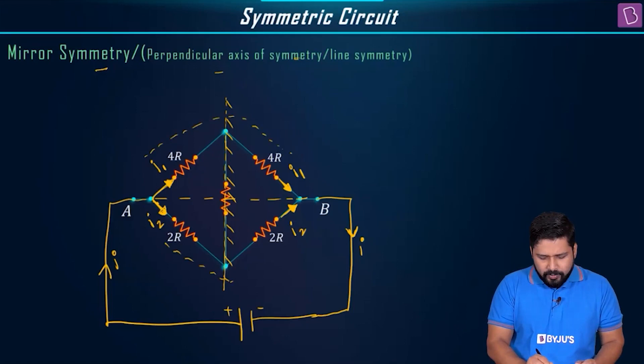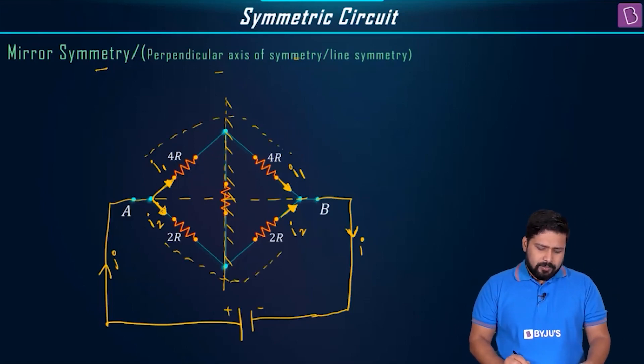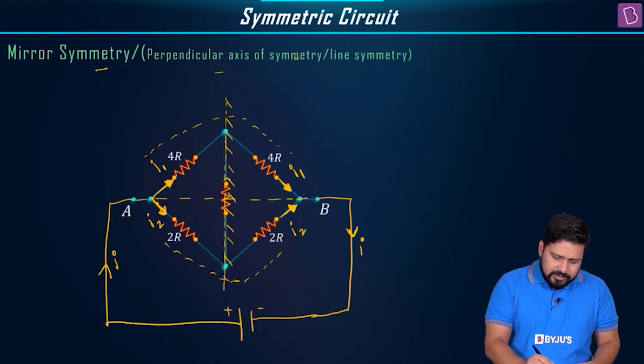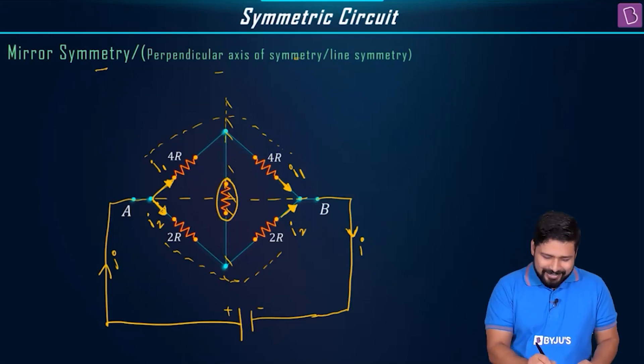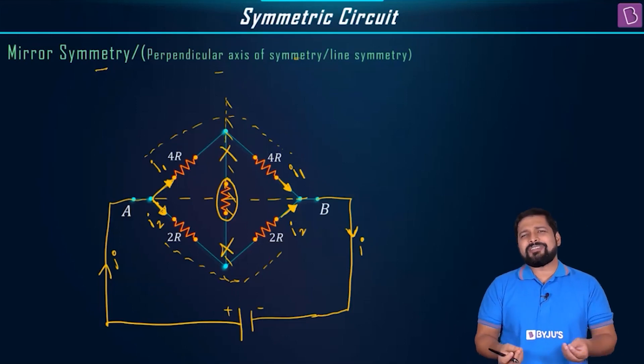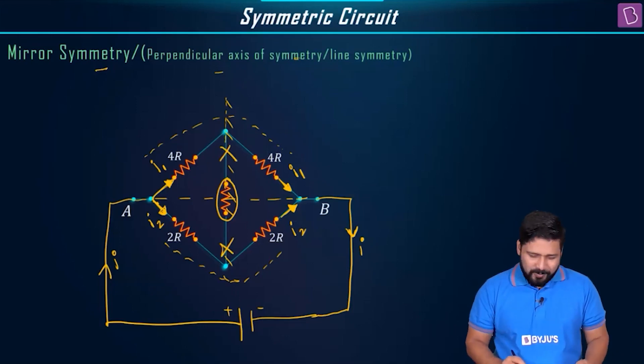I2 is coming like this and I2 flows like this. Which means that through this resistance, no current is flowing. There is no current through this resistance. So this is just redundant. We can just remove that.